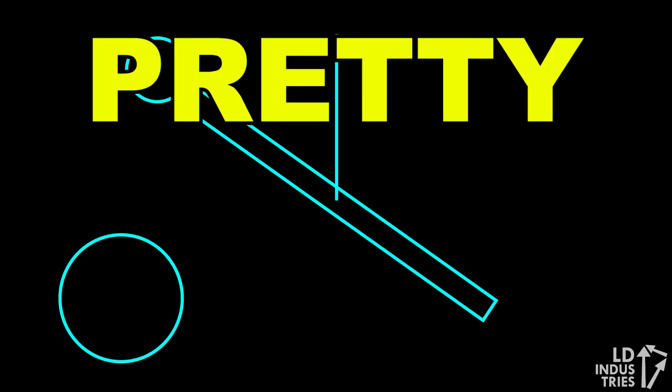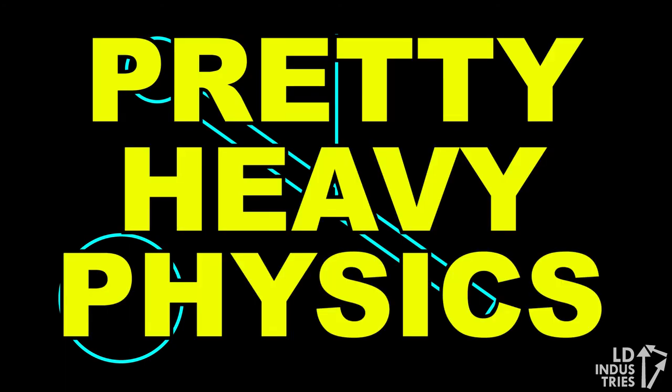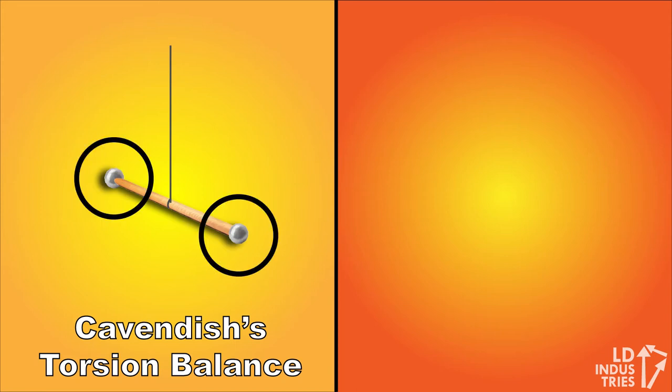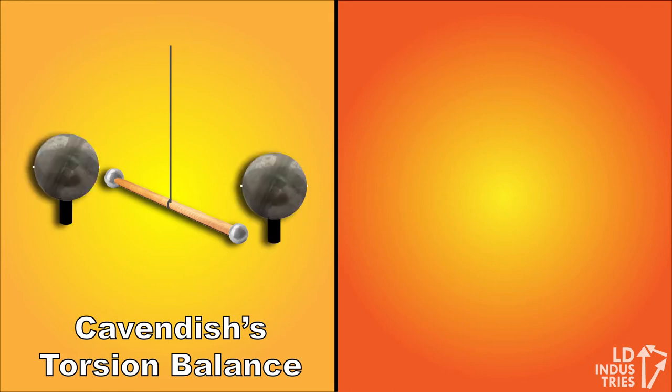In Cavendish's design, the rod was made of wood and was just under two meters long. Two lead balls with a mass of about three-quarters of a kilogram were placed at each end of the rod, and the hanging spheres were placed initially about 23 centimeters from a large 30 centimeter and 156 kilogram lead ball.